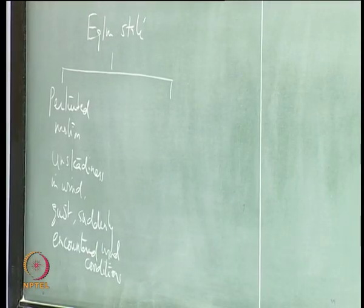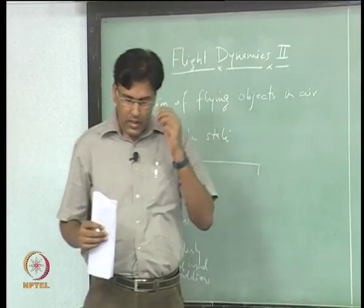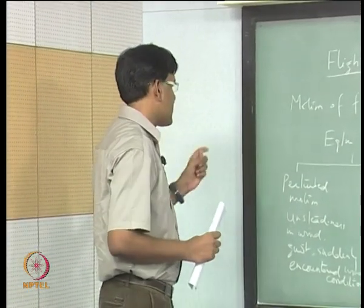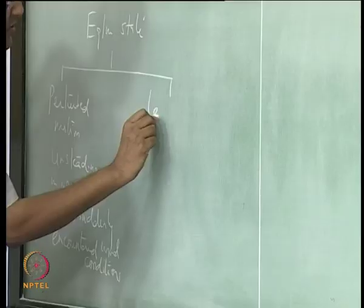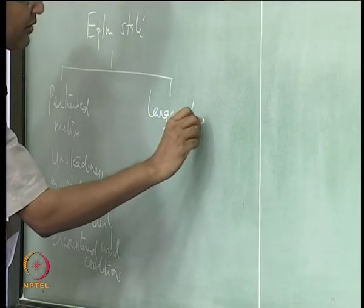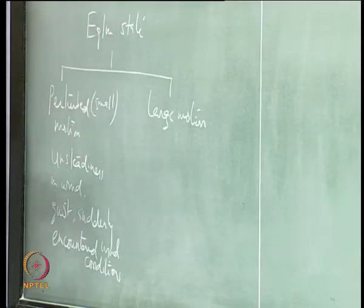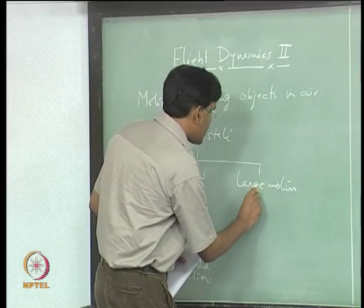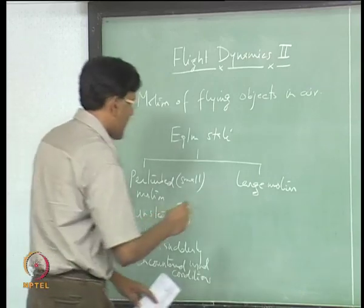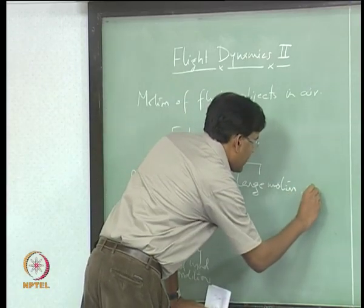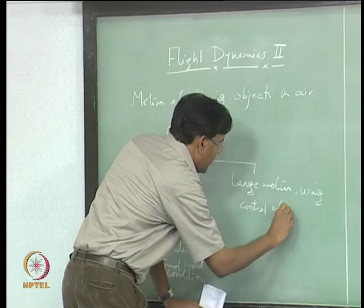There are two things. One is to look at the small motion around the equilibrium state, which is mainly caused by small disturbances. The other is related to large motion. So we have small motion around the equilibrium state and large motion which requires control effort.